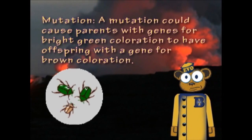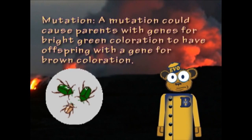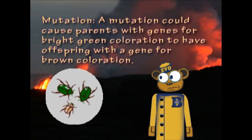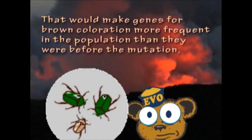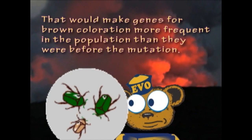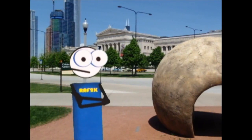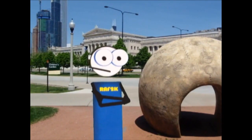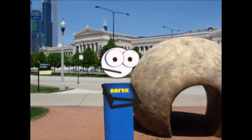Mutation: A mutation could cause parents with genes for bright green coloration to have offspring with a gene for brown coloration. That would make genes for brown coloration more frequent in the population than they were before the mutation. A change in the frequency of a trait does not equate to a change in the genes of the individuals. In the example given, the beetles already had genes for brown.